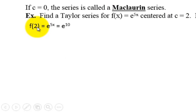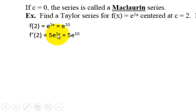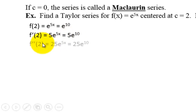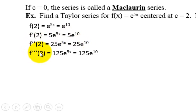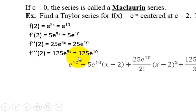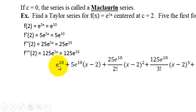Here we have f of 2, because we're centered at 2. So when we plug 2 in, we get e to the 10th. The first derivative is 5e to the 5x, and when we evaluate at 2, we get 5e to the 10th. Here's the second derivative and its value, and here's the third derivative and its value when we evaluate at 2. Now here's the Taylor polynomial.